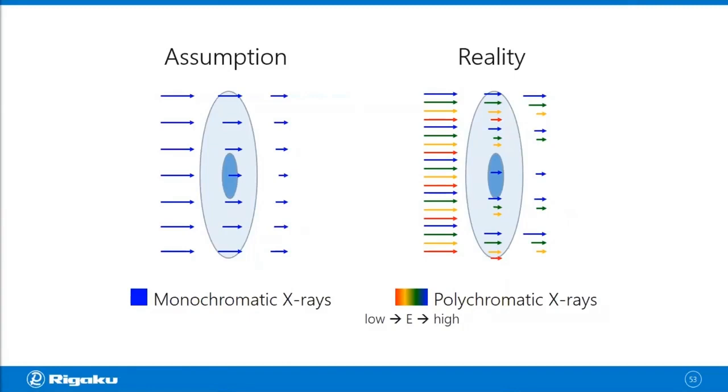And high energy x-rays are also called hard x-rays. And you can say that the incoming polychromatic x-rays energy shifts towards the higher side as they go through the sample, which also means x-rays harden when they go through the sample. And that's where the term beam hardening comes from.